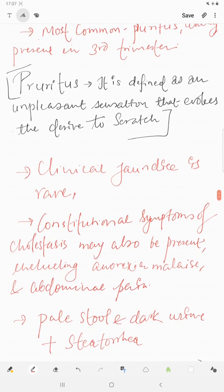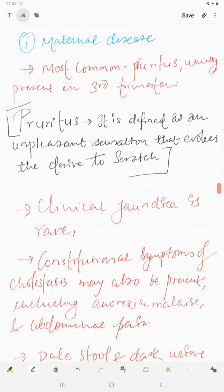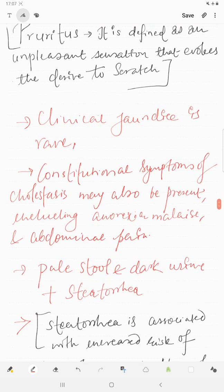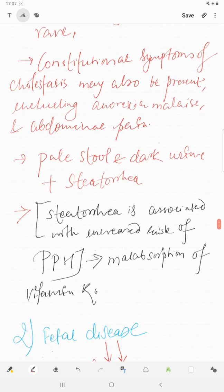Clinical jaundice is rare in obstetric jaundice. It may be present in some cases. Constitutional symptoms may also be present, like anorexia, abdominal pain. There will be dark urine because of high conjugated bilirubin in circulation, which is filtered by the kidney and changes to urobilin.